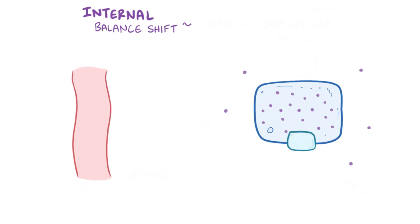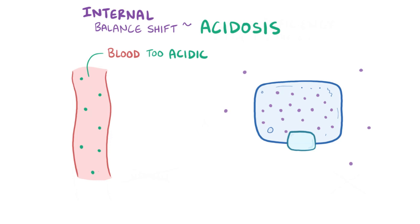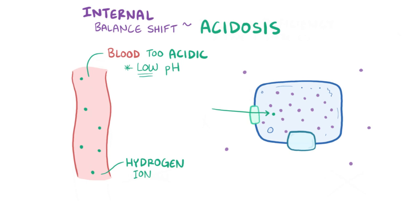Another cause of an internal potassium balance shift is acidosis, which is when the blood becomes too acidic — meaning a higher concentration of hydrogen ions and a lower blood pH. One way the body can increase blood pH is by moving hydrogen ions out of the blood and into cells using a special ion transporter that exchanges a hydrogen ion for a potassium ion across the cell membrane. So hydrogen ions enter cells and potassium ions leave and enter the blood, which might help with the acidosis but results in hyperkalemia.